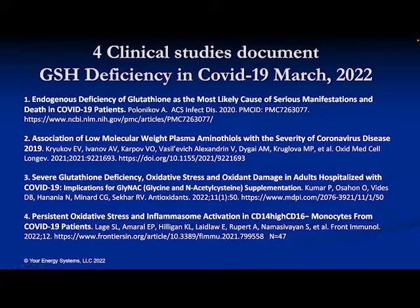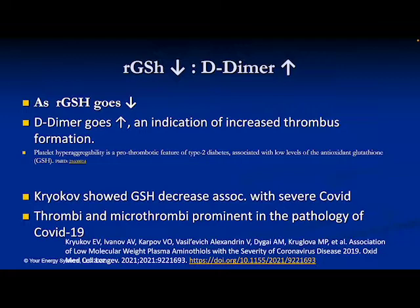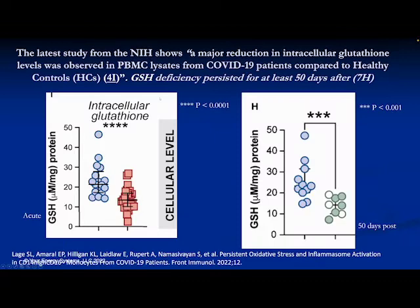A second study by Kurikov showed that as glutathione in the reduced form — the active form — goes down, D-dimer goes up. D-dimer is an indication of increased thrombin formation and is actually a byproduct of thrombus degradation. The higher the D-dimer, the more clot formation has occurred. So glutathione appears critically involved — its depletion allows clots to form.